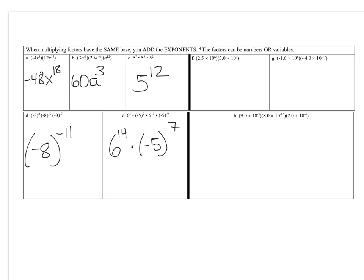Now apply this to scientific notation. Letter F: 2.5 times 10 to the 6th, times 3 times 10 to the 2nd. Multiply the coefficients: 2.5 times 3 is 7.5. Then the powers of 10 have the same base, so add the exponents: 10 to the 6th times 10 to the 2nd gives 10 to the 8th. Final answer: 7.5 times 10 to the 8th — already in scientific notation.